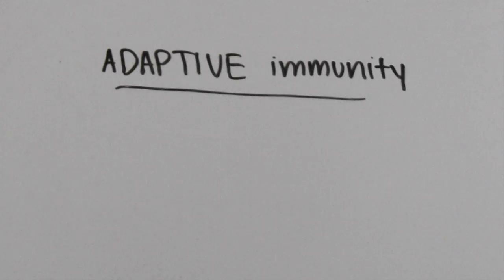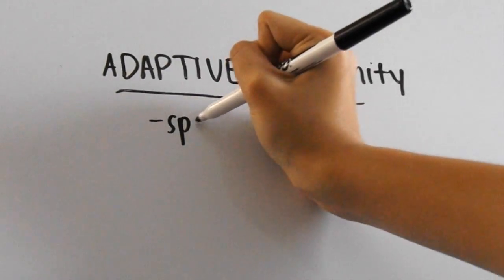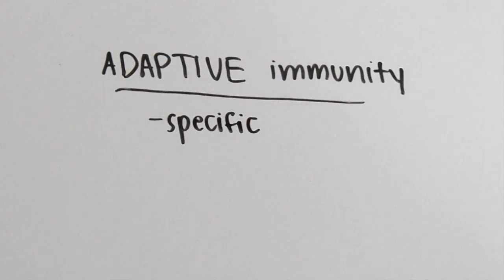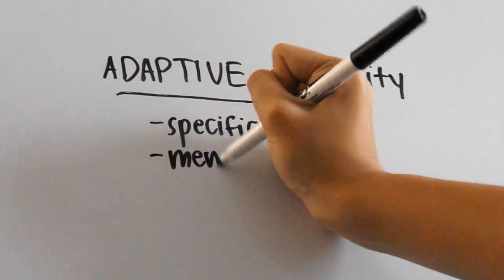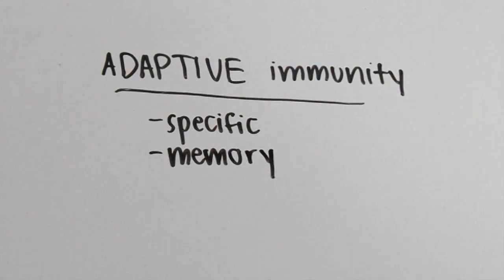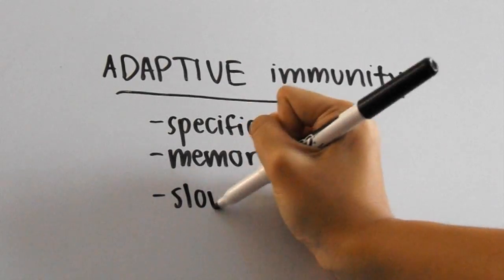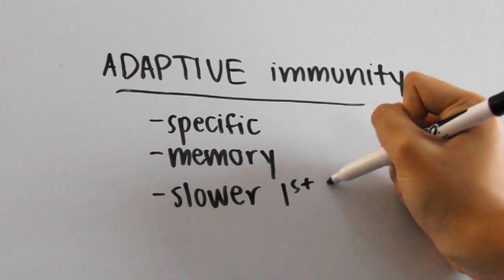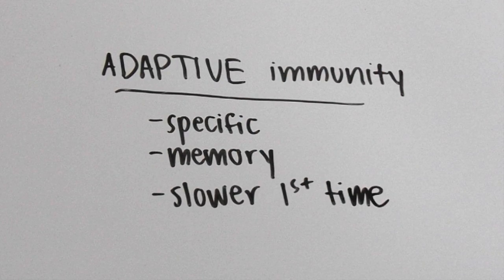On the other hand, adaptive immunity is extremely specific and depends on memory. If the body encounters a pathogen it hasn't met with before, the response will be a little bit slower. With each time that the body is exposed to the pathogen, the response gets faster and faster.